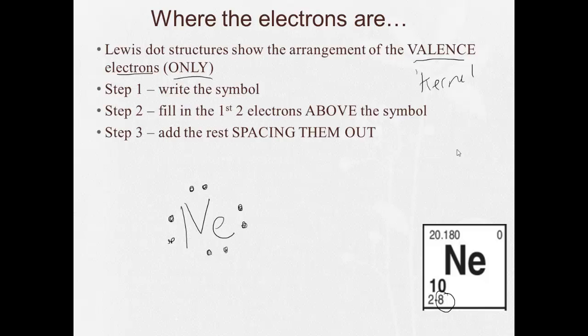Let's say I was going to do carbon. Carbon has 4 valence electrons. Write the symbol. First two go above. 1, 2, 3, 4.